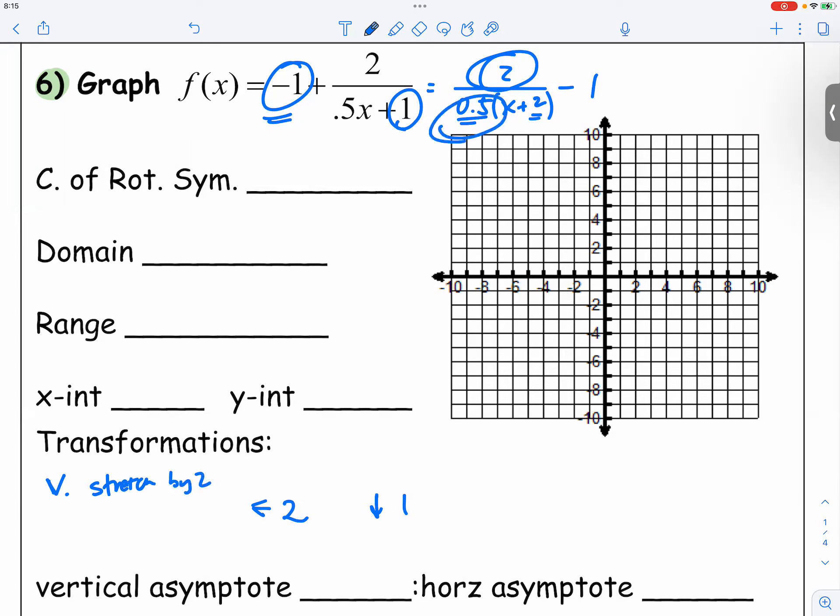And then this 1 half right here is a horizontal stretch by also by 2, because 1 half reciprocal is 2.